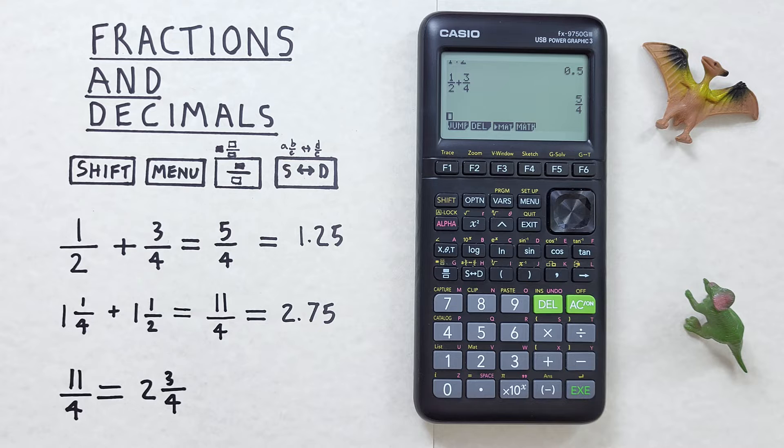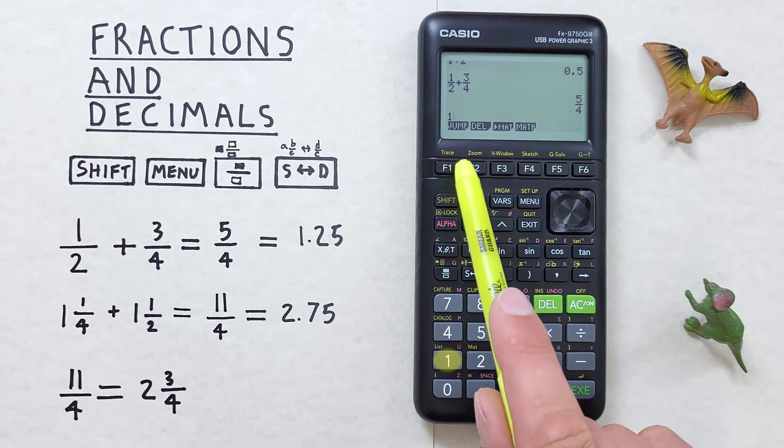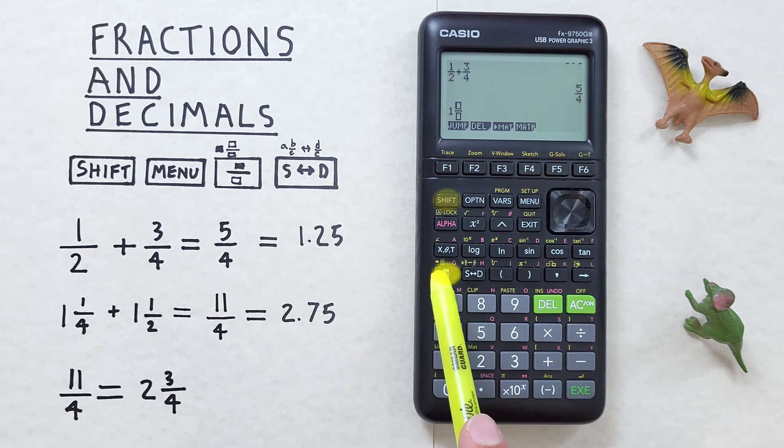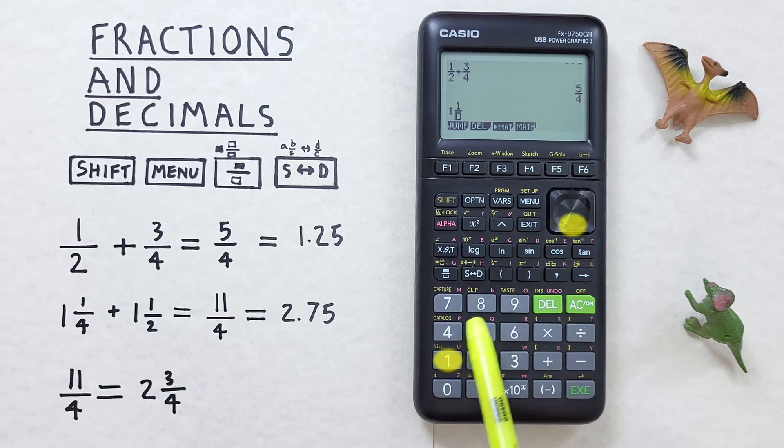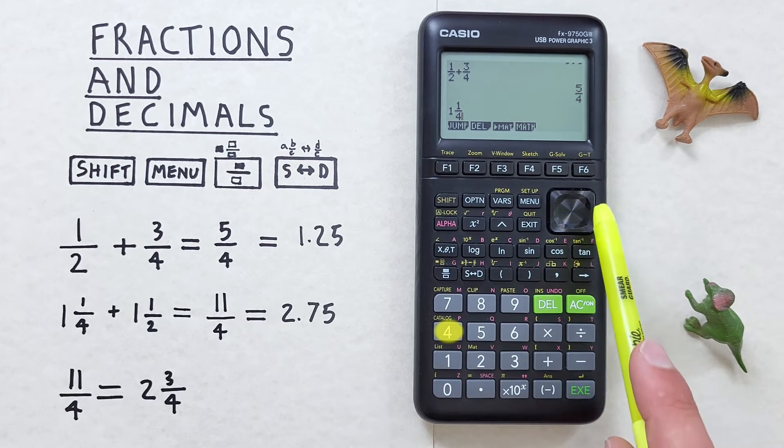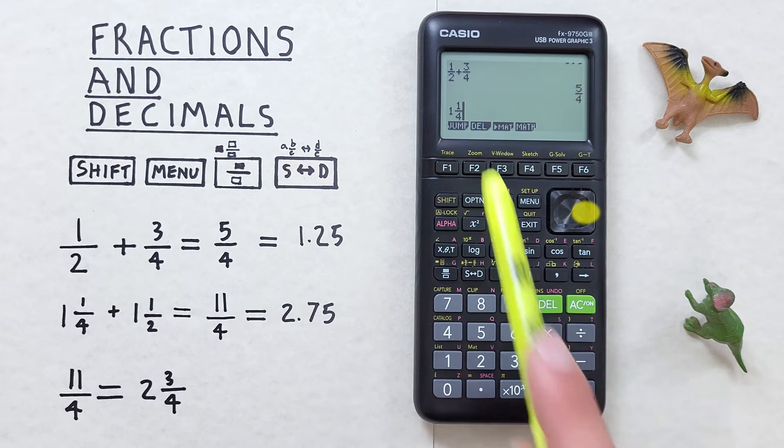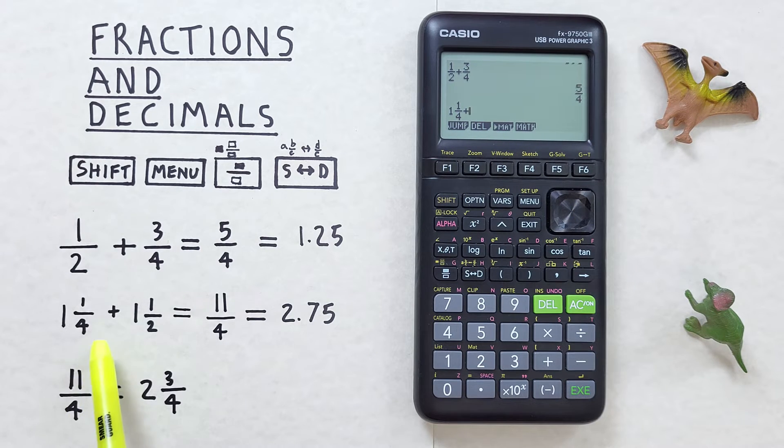What if we have mixed numbers like say this 1 and 1 over 4 plus 1 and 1 over 2? To do that we use the shift function of the fraction key. That's here. So to enter this we'll start with the 1 and then we press shift fraction key. This allows us to enter mixed numbers. So we have 1 over 4 here and scroll out with the right. There we go, plus 1 and 1 over 2.